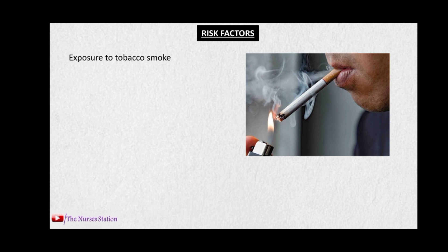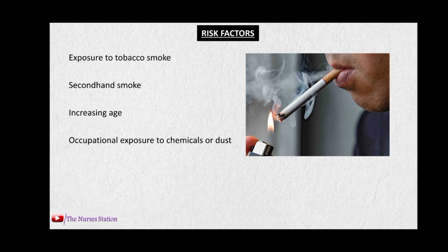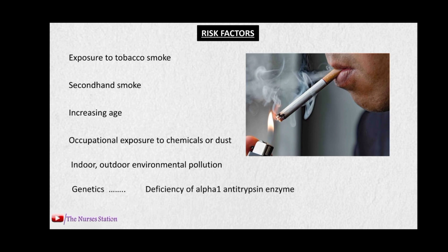Other risk factors include secondhand smoke, increasing age, occupational exposure to chemicals or dust, indoor and outdoor environmental pollution, and genetics. The deficiency of the alpha-1 antitrypsin enzyme puts a person at great risk of developing COPD. The alpha-1 antitrypsin enzyme is responsible for protecting the lung parenchyma.